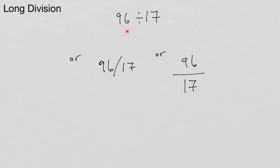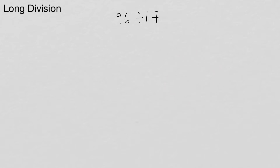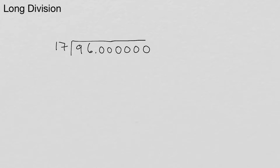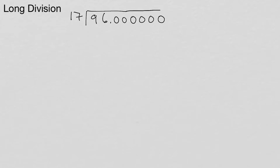Alright, long division. So we're doing this problem here: 96 divided by 17. Sometimes you'll see it written as a ratio or fraction notation. You could also write it as a fraction, 96 over 17. Traditionally, 96 divided by 17 — this is how we're going to set it up for our long division.